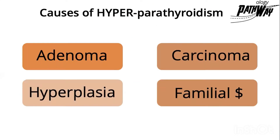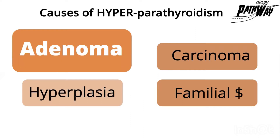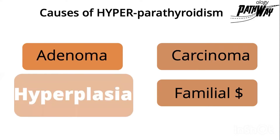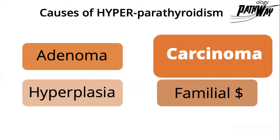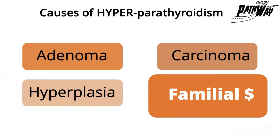What are the causes of hyperparathyroidism? Number one, it could be an adenoma. Number two, hyperplasia. Number three, carcinoma or familial syndrome.